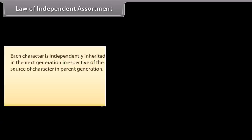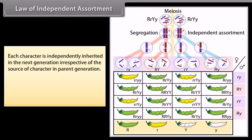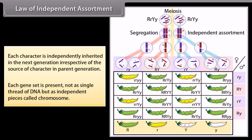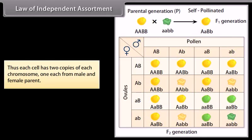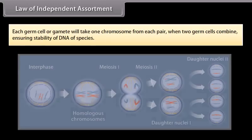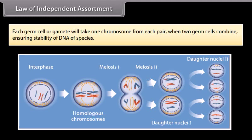Law of independent assortment. Each character is independently inherited in the next generation, irrespective of the source of character in parent generation. Each gene set is present, not as single thread of DNA, but as independent pieces called chromosome. Thus, each cell has two copies of each chromosome, one each from male and female parent. Each germ cell or gamete will take one chromosome from each pair. When two germ cells combine, ensuring stability of DNA of species.